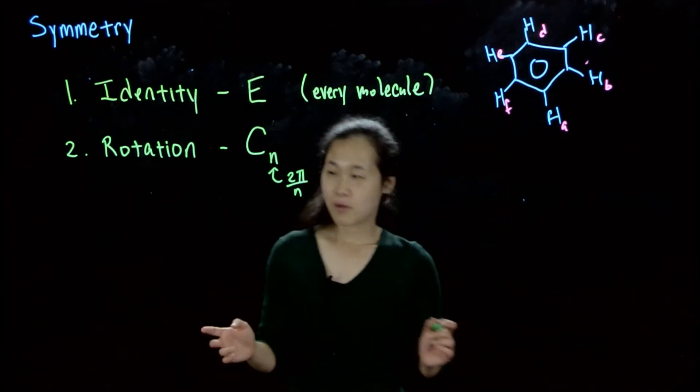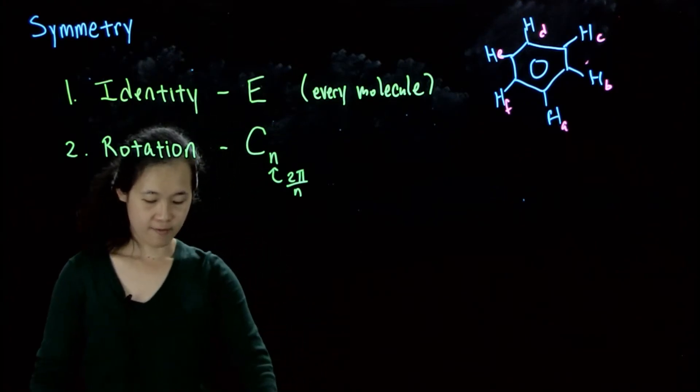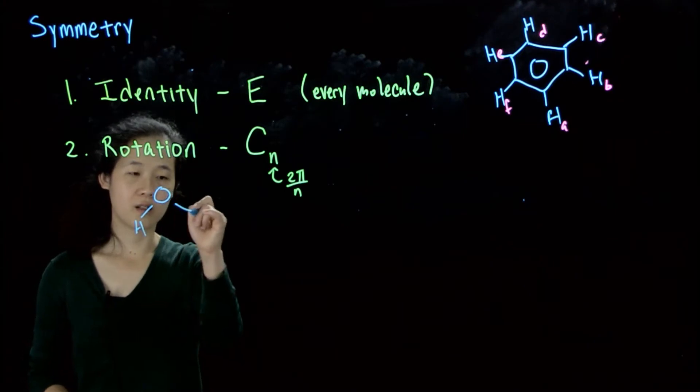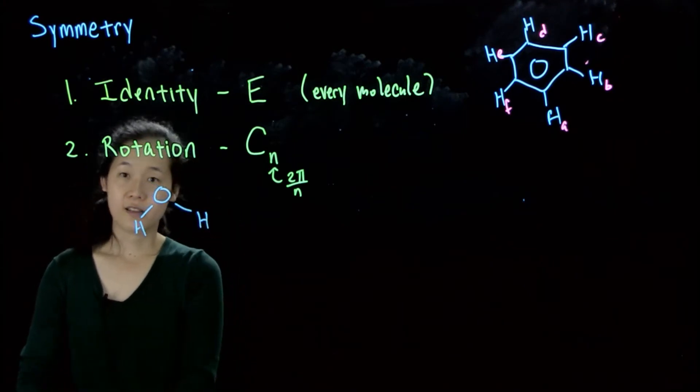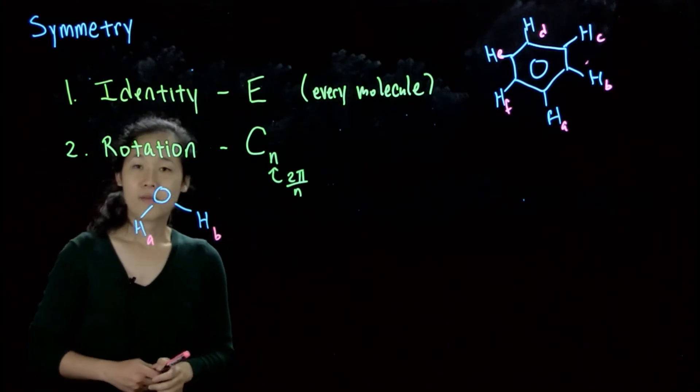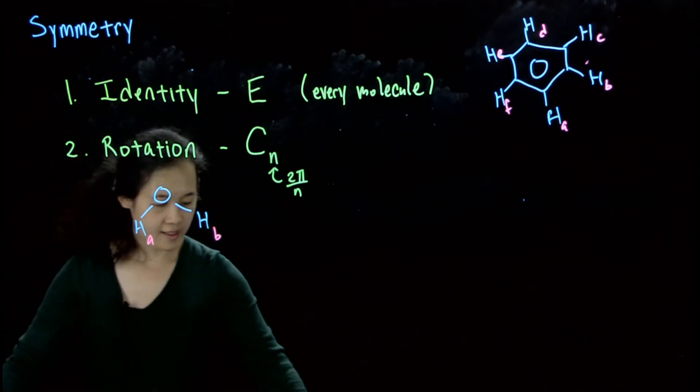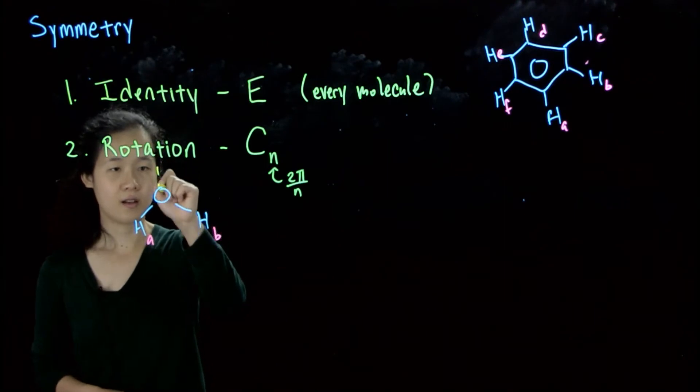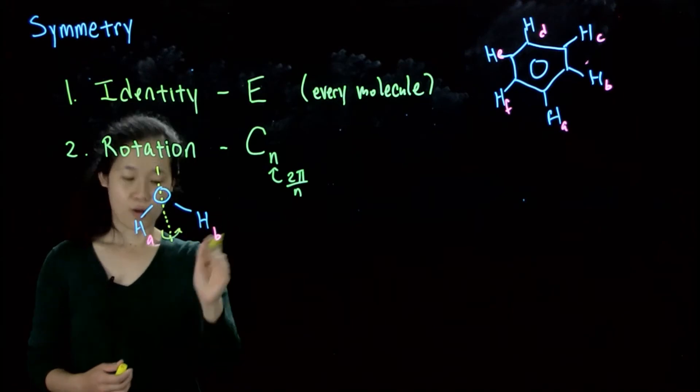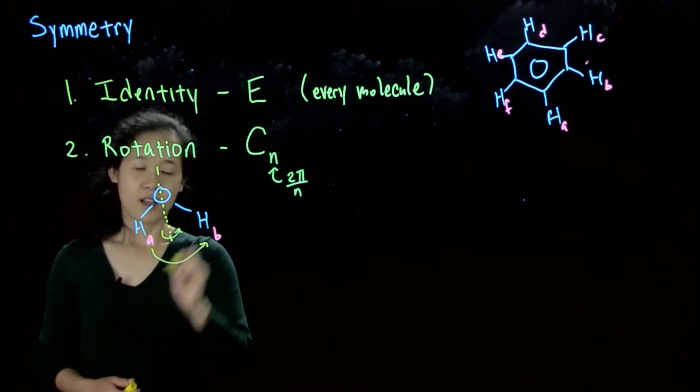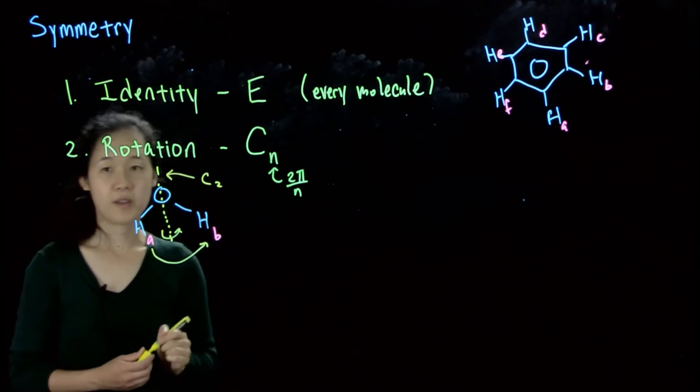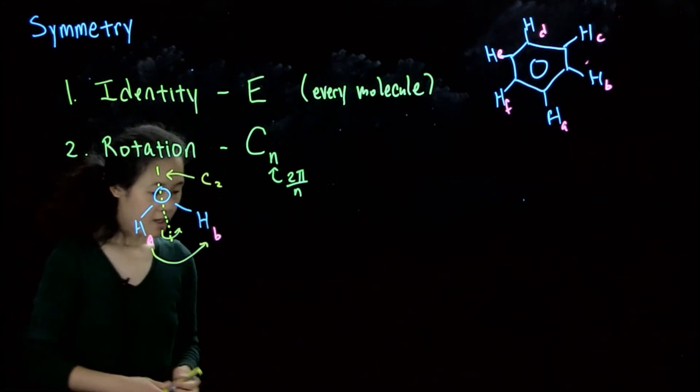So as another example, if we take water, here's water. So water has two hydrogens, HA and HB. So you could imagine rotating it down this axis. So here we could then rotate about this axis and then A would go to B. And so this is what's called the C2 axis, C2, because again we're rotating by 180 degrees.